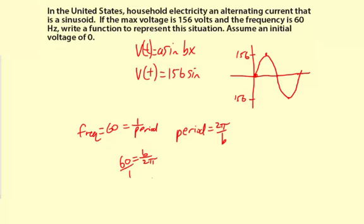And we can cross multiply here and solve. 120π equals B. So that's what we're going to put for our B value.